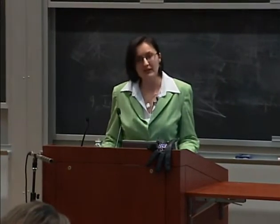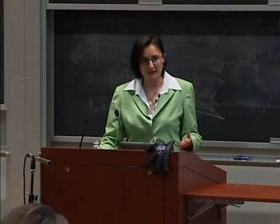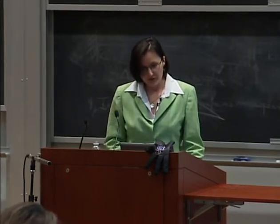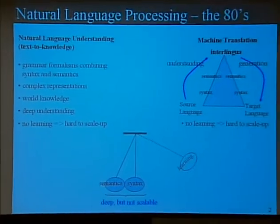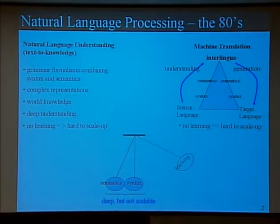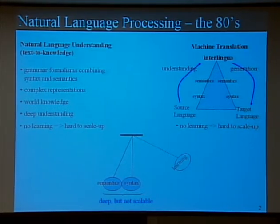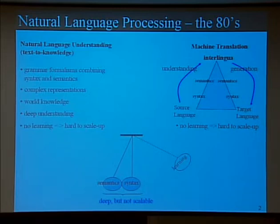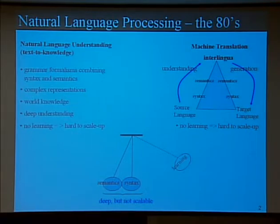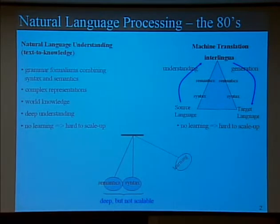I'm going to talk today about learning constraint-based grammar from representative data, which is part of what I did in my thesis at Columbia. Just to show you what natural language processing looked like in the 80s: the main focus was on how to get computers to do deep processing of language. For example, in machine translation, the goal was to go from the source language out to an interlingua and then generate the target language — requiring a full semantic analysis. All this work focused on grammar formalisms combining syntax and semantics, but the problem was that these methods were not scalable — grammars were written by hand, and learning was not part of the picture.